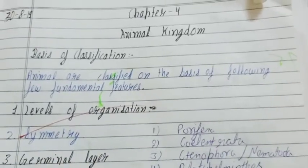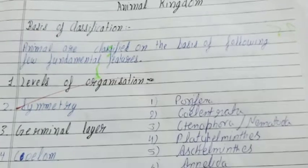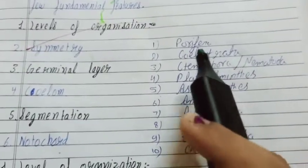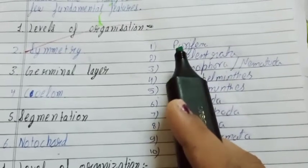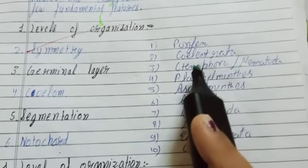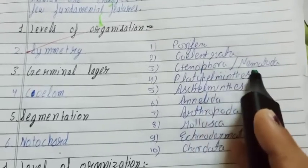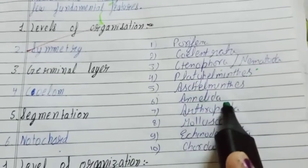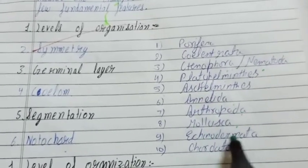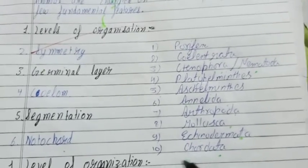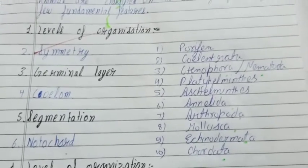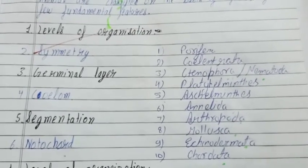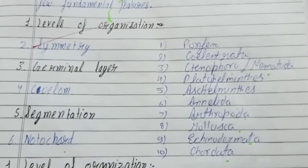Basically, we have divided Animal Kingdom into 10 parts: Porifera, Cnidaria, Ctenophora, Nematoda, Platyhelminthes, Aschelminthes, Annelida, Arthropoda, Mollusca, Echinodermata, and Chordata. We know that there are a large number of animals on Earth. Many living organisms, or animals, are present on Earth.